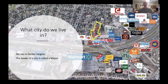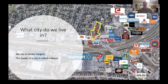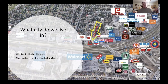So what city do we live in? Harker Heights. We live in Harker Heights, and the leader of a city is called a mayor. Yesterday we talked about what kind of community Harker Heights is, and we agreed it's kind of like a suburban area — it's not a big city, people have lots of places they can go, and they have yards and different things. So we live in Harker Heights and our leader is a mayor.